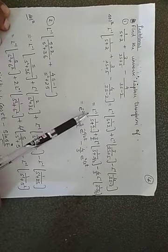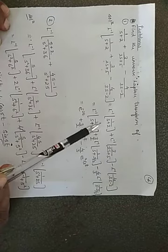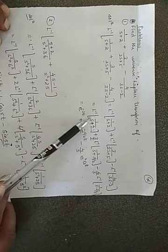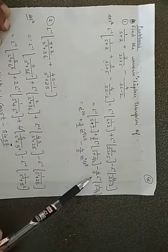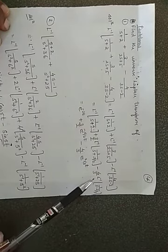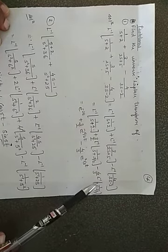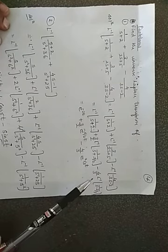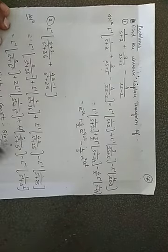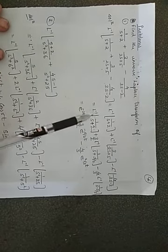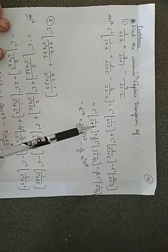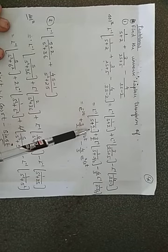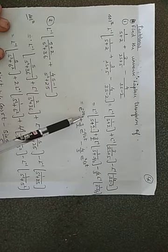In all three cases, the power of s is 1 and the coefficient of s is 1. Whenever the power of s is 1, your answer must be in terms of e to the power of something — that is the clue to remember. Here, plus sign is there, and we know that L inverse of 1 upon s plus a is e raised to minus a·t.